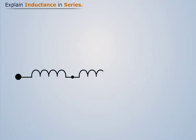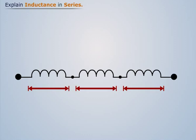Consider three inductors connected in series with each other. We see that the current which flows through the first inductor has no other way to go but to pass through the second inductor and then the third inductor. Thus inductors in series have a common current flowing through them.